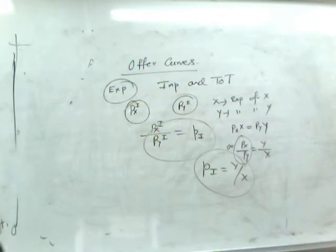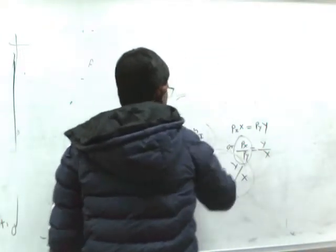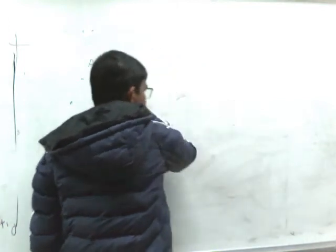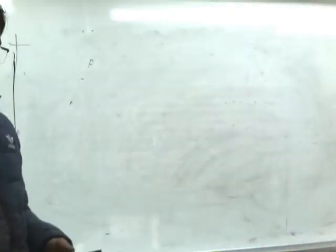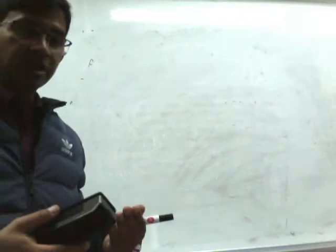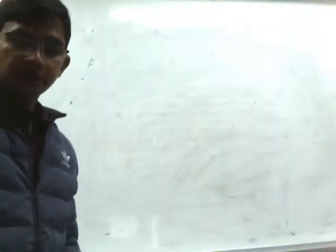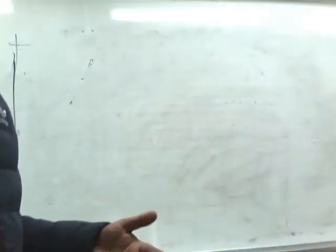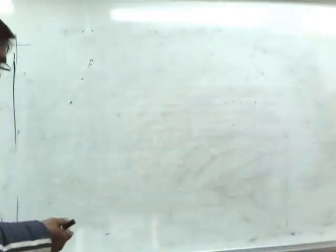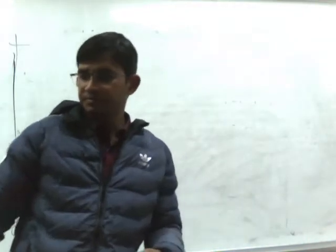One important thing to remember when considering the offer curve: it does not matter how much we are producing. What matters is the amount of the commodity that producers are willing to export and the amount of Y that consumers are willing to import. So it is not related to total production or total consumption; rather it is related to the volume of willingness to purchase by consumers and willingness to sell by producers.